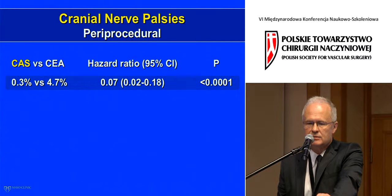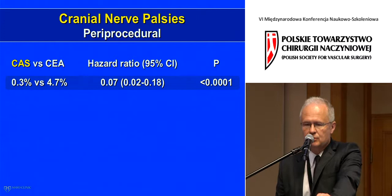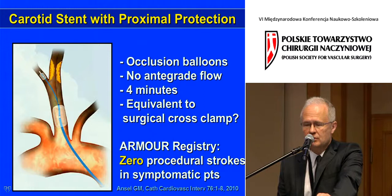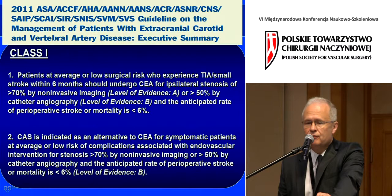There were obvious procedure-related complications associated with surgery, including cranial nerve palsy. Regarding newer registries, with current embolic protection devices we may achieve much better stroke prevention. One example is the ARMOR registry, which showed zero periprocedural stroke in symptomatic patients treated with angioplasty and stenting.